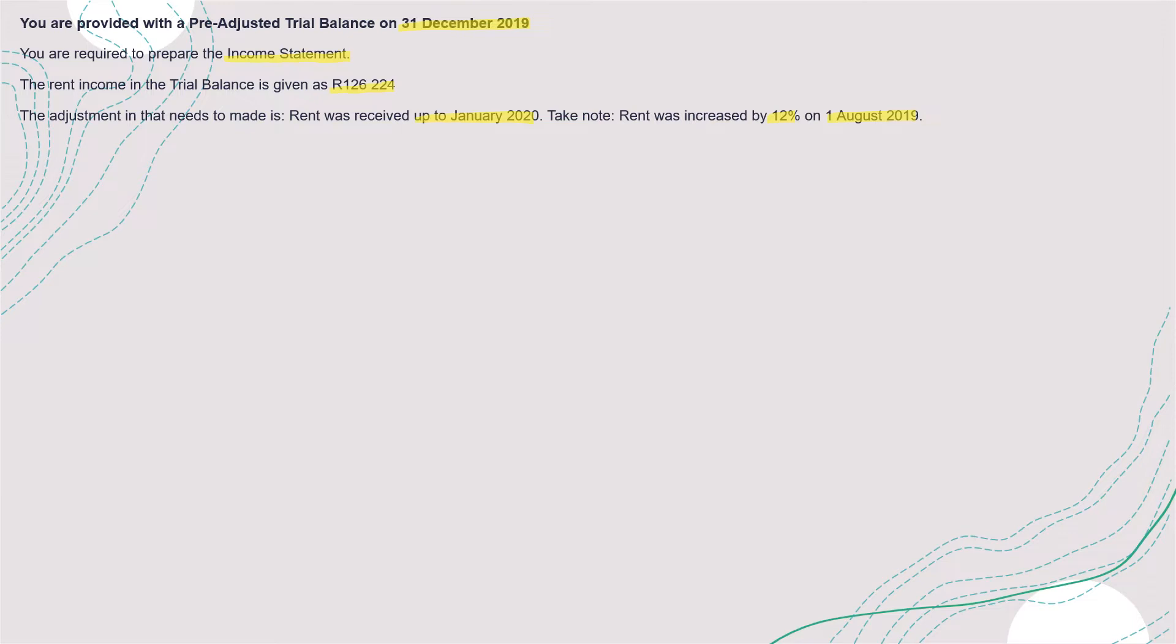So how much would you receive in rent? That's 126,224, and this is for 13 months. Remember, the 12 months ends on December. So we've got one extra month, which is January - 13 months.